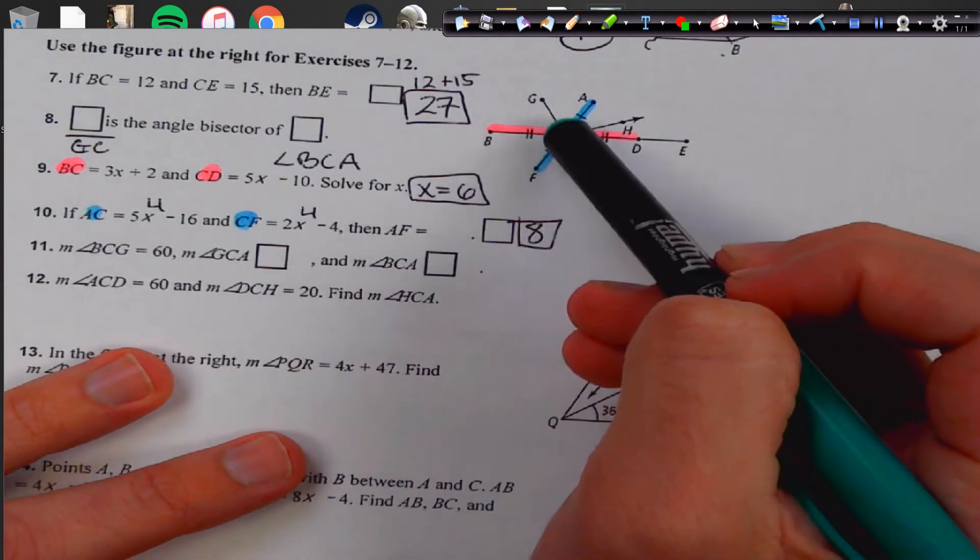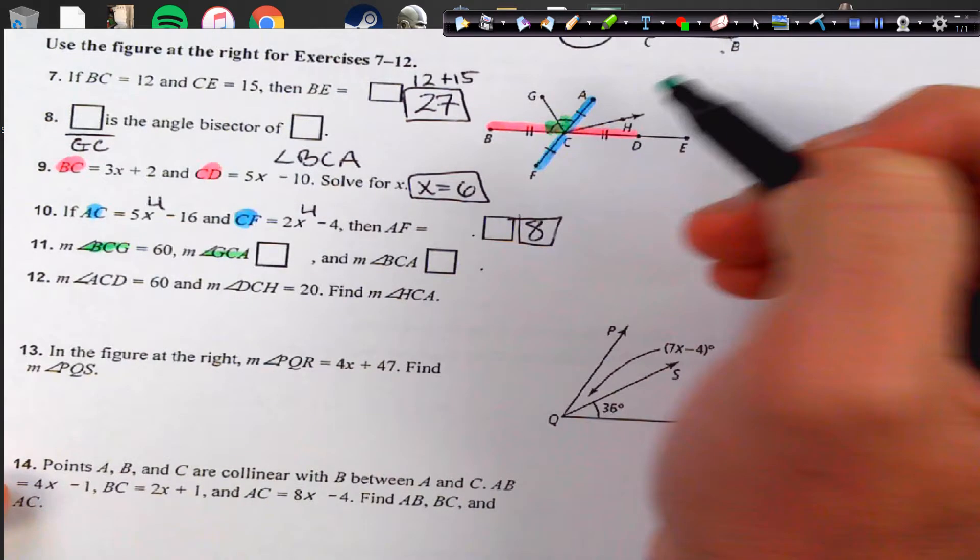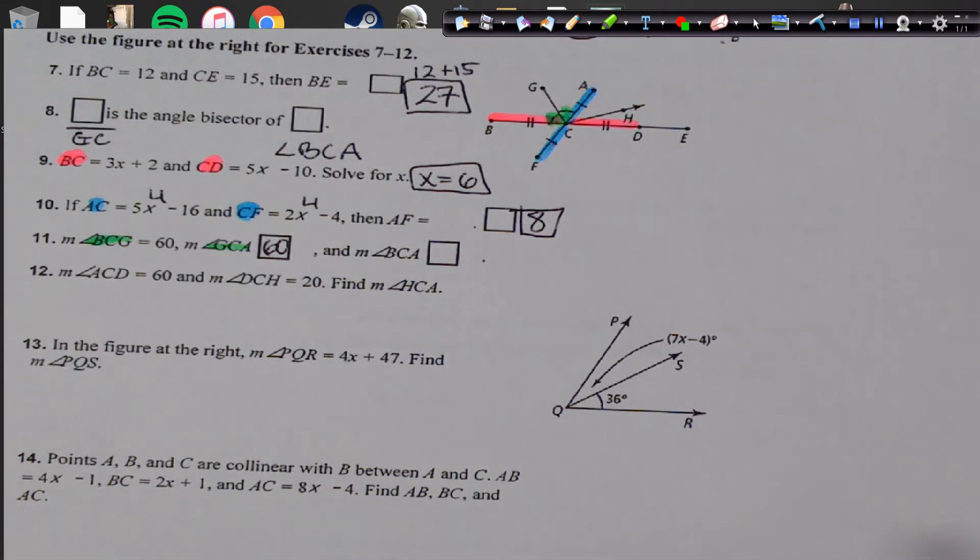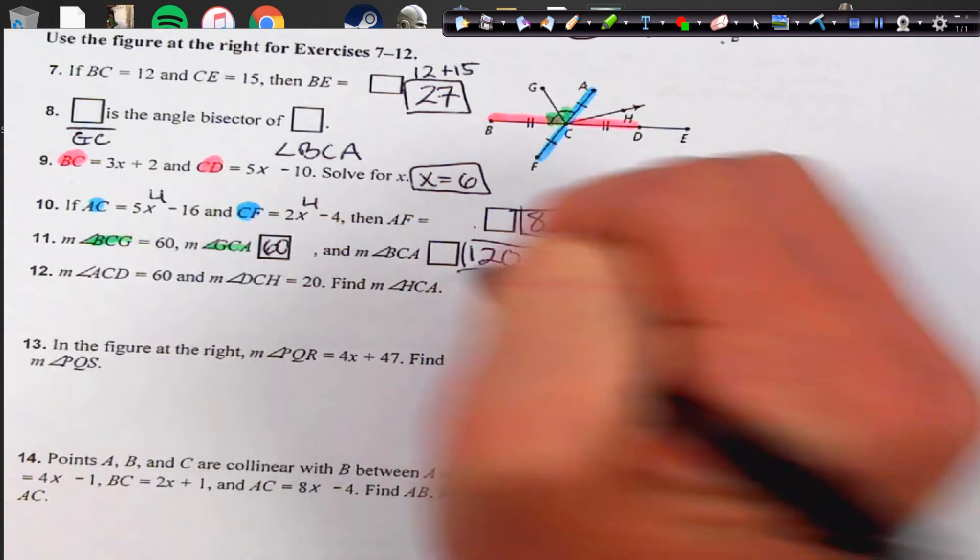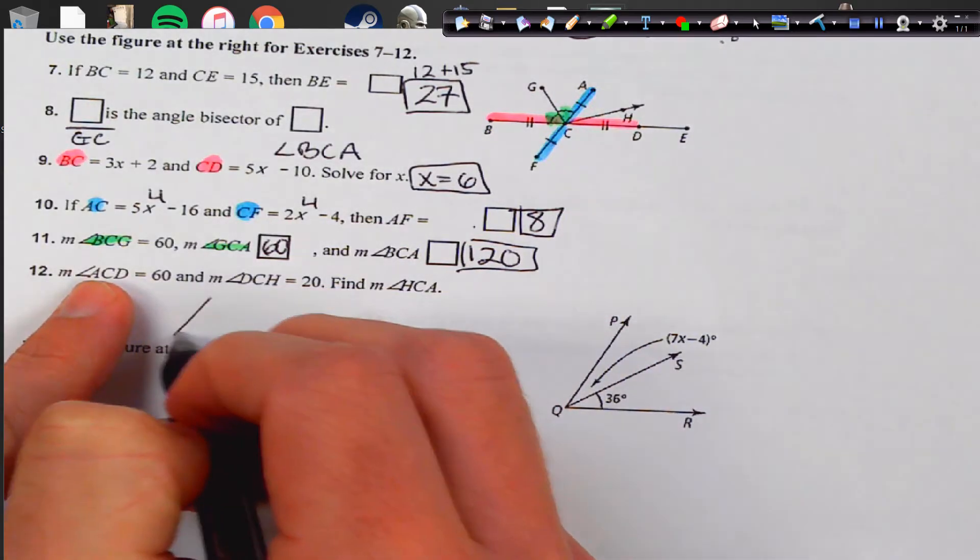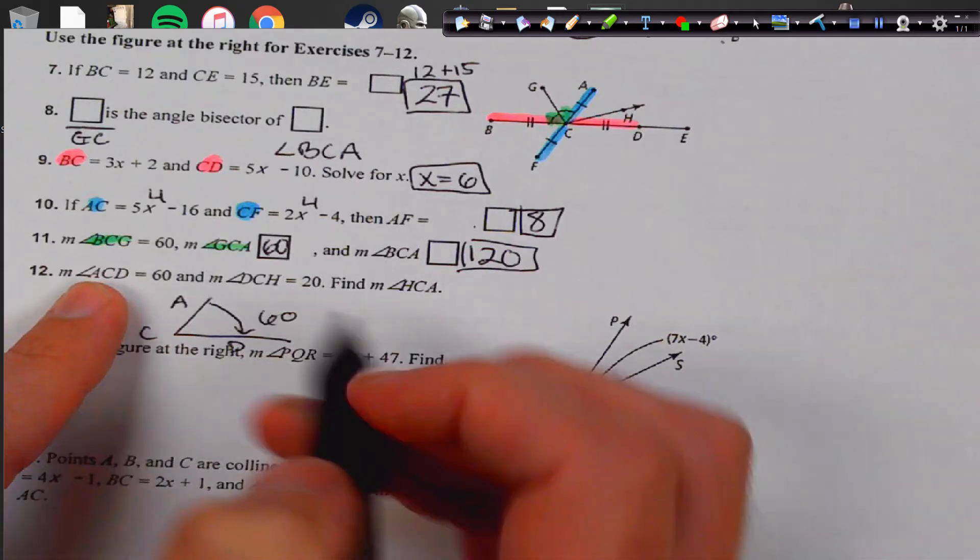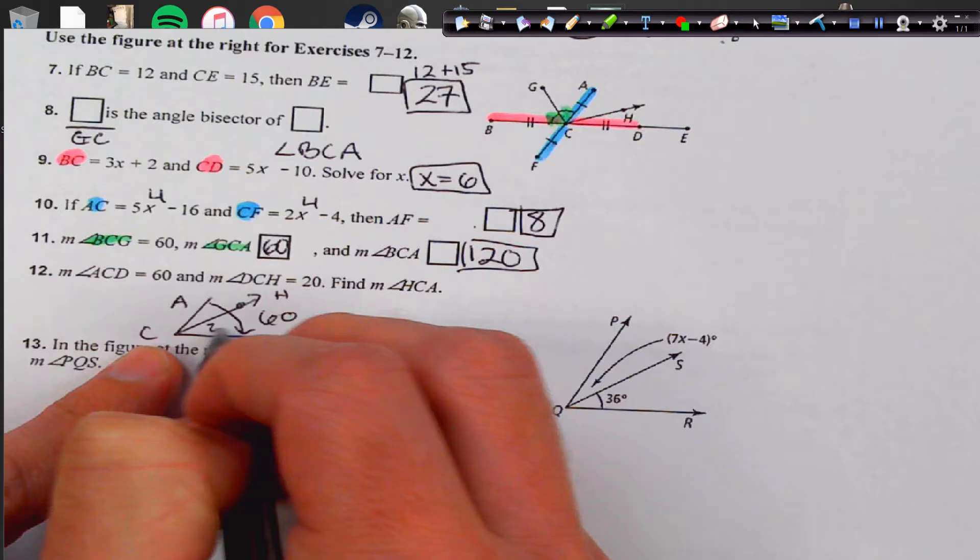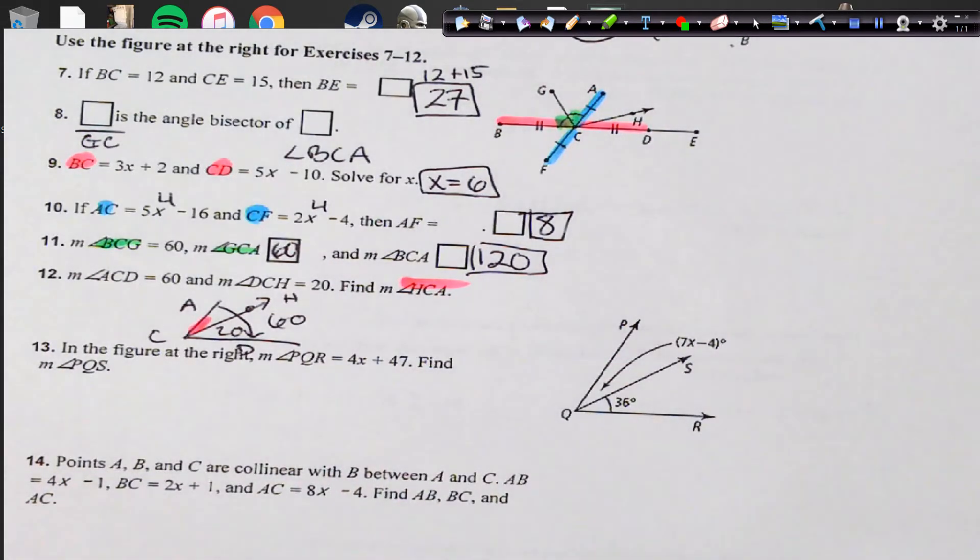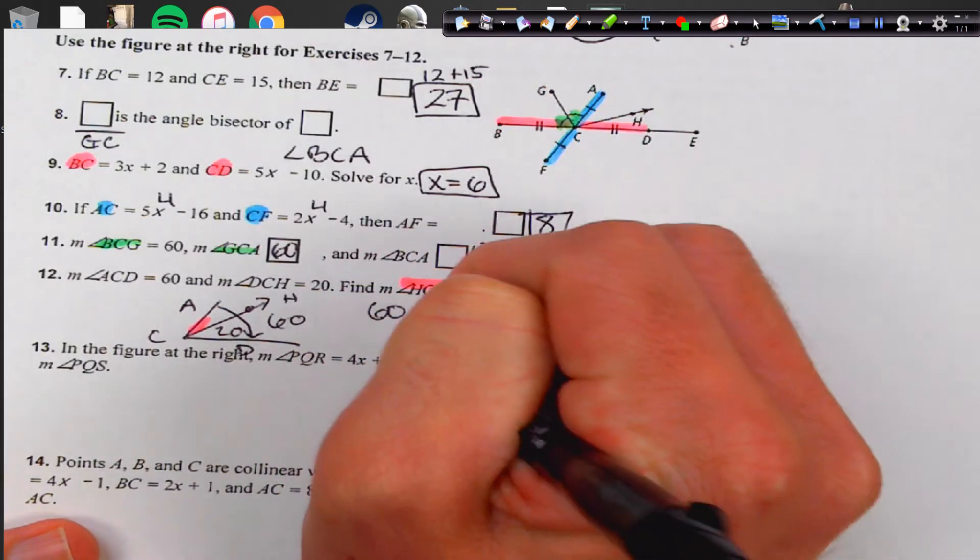Alright, BCG, BCG is this angle right in here, and GCA is this other angle, they're congruent to each other, so if that's sixty, guess what? The other one is also sixty, and then BCA is the full angle, so we're going to add those two together and get one hundred and twenty. Now we have ACD is sixty, so ACD is sixty, and then DCH, so H is coming through here, this piece is twenty, so I'm trying to find out what HCA is, which is basically this top piece right up in here, and what plus twenty would give us sixty, and the answer would be forty. So, we could do that by taking the full angle, subtracting the smaller angle to get forty degrees.